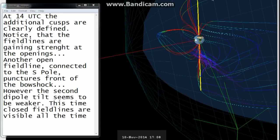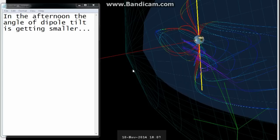However, the second dipole tilt seems to be weaker. This time closed field lines are visible all the time. In the afternoon, the angle of the dipole tilt is getting smaller.